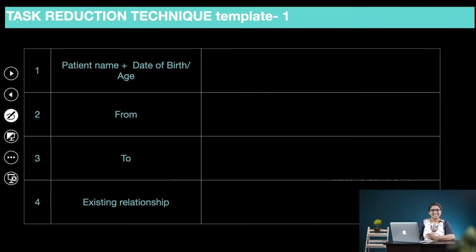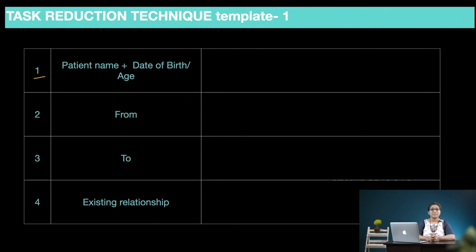This is the template — it's called the Task Reduction Template. I'm showing the first half here, which has four bits of information: number one, patient name and date of birth or age; number two, from; number three, to; and number four, existing relationship.